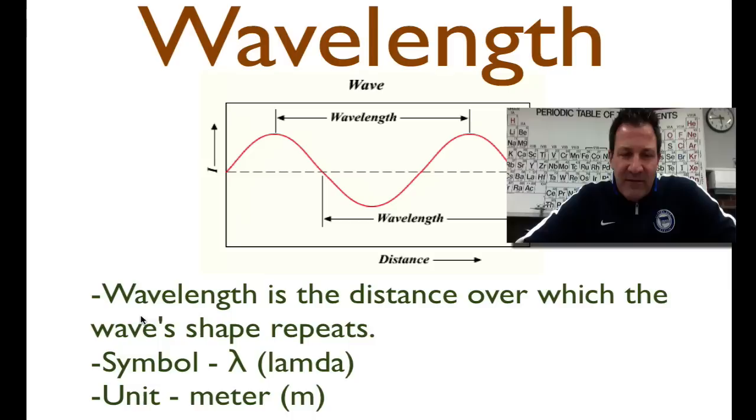And we often measure it from crest to crest. It can be measured from trough to trough or from this null point to this zero point or any identical point. You can even measure it from this middle of this down slope to the middle of that down slope, and you would get the same distance. It's the length of the wave.